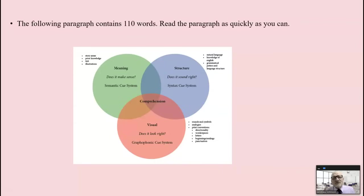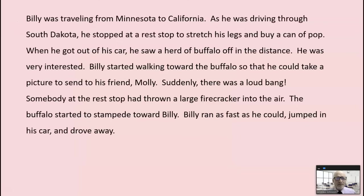And I want to give you, some people still say, well, the three cueing system, that's debunked. That's crazy. I'm going to give you some proof. 110 words here. Read the paragraph as quickly as you can. Billy was traveling from Minnesota to California. As he was driving through South Dakota, he stopped at a rest stop to stretch his legs and buy a can of pop. Okay, you get the idea. You don't have to read the whole thing.